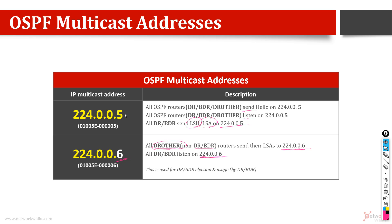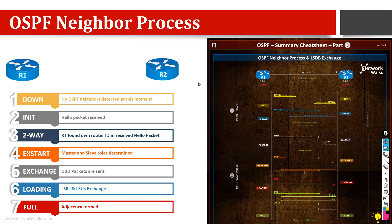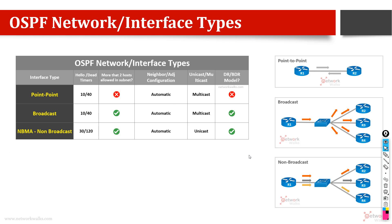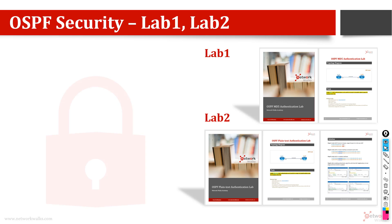So these two multicast addresses are being used. I hope it's clear. If you want to go through in detail, there is a short video on how OSPF routers become neighbors of each other. You can zoom in there to find which multicast address is used by whom, for what purpose, and what the role of DR and BDR is. There is also a short video specifically on DR and BDR.